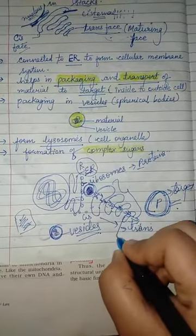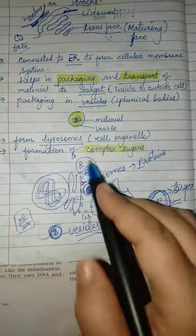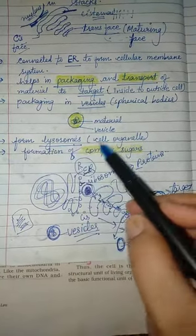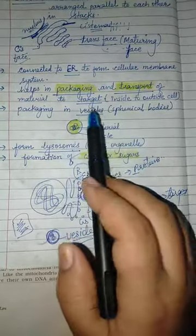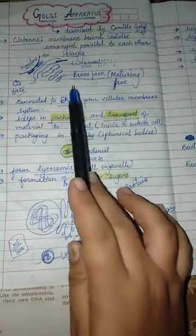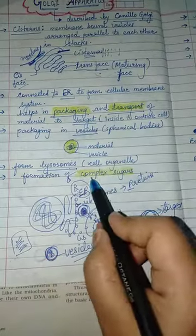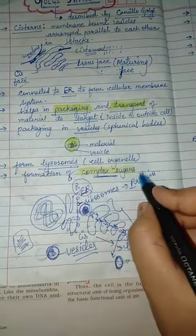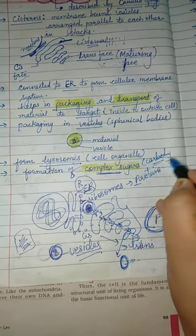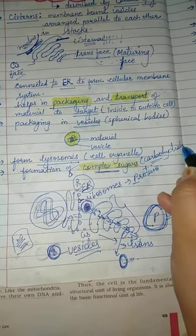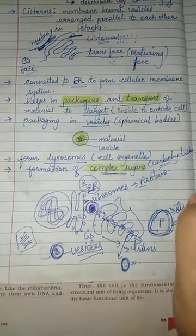One important cell organelle formed by the Golgi apparatus is the lysosome — we will discuss lysosomes in the next lecture. Another key function of the Golgi apparatus is the formation of complex sugars, that is carbohydrates.